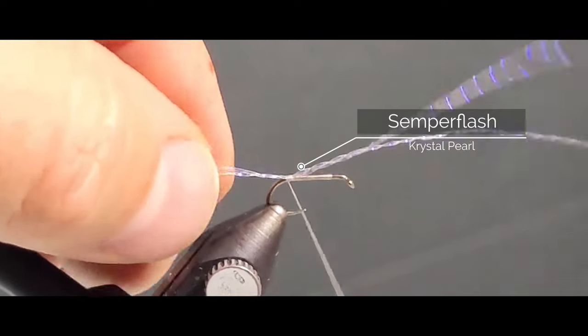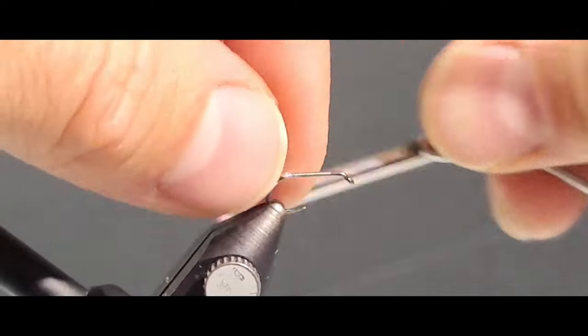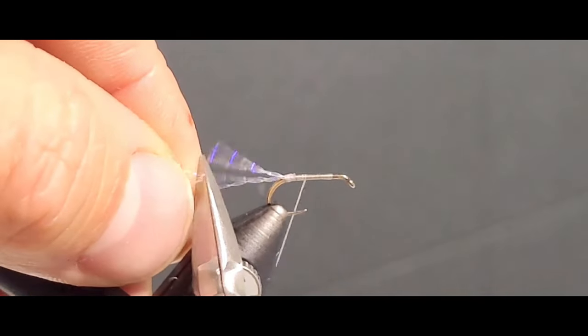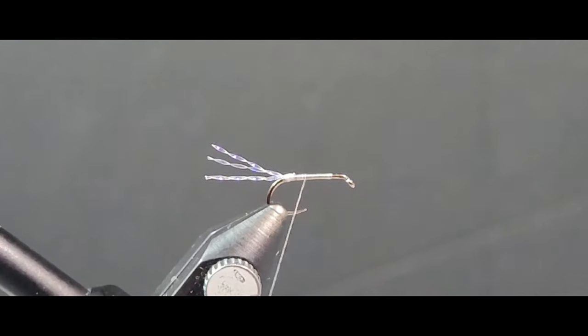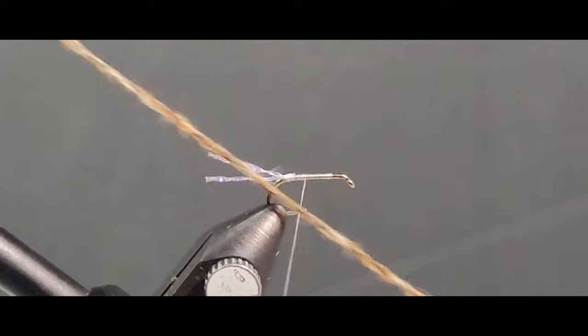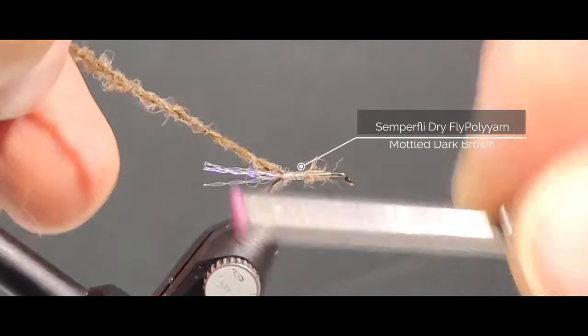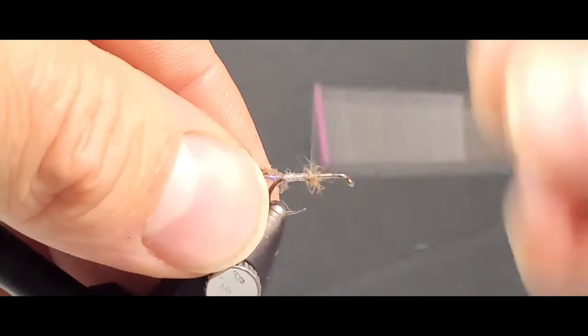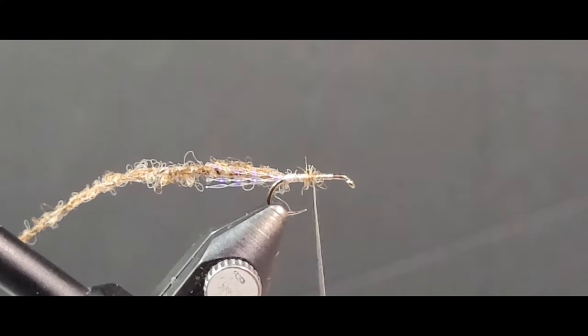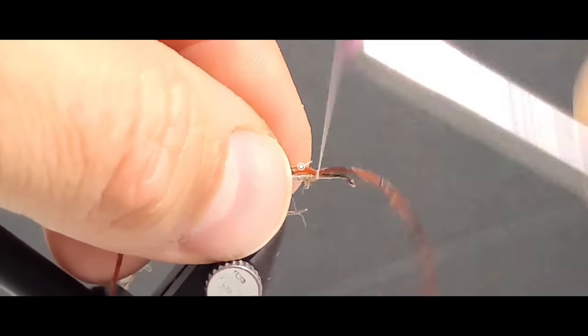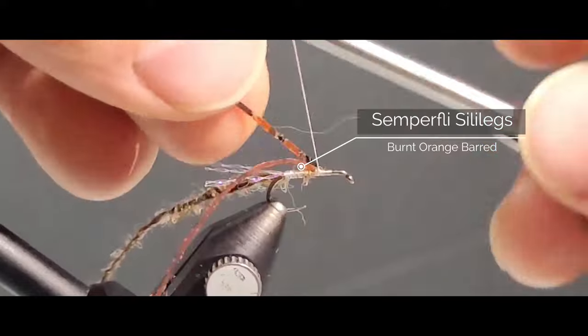These are a neutral buoyancy fly so you can really have fun with this, imitating the natural back swimmers. They'll dive down a little bit, they'll float up, they'll be in and around the vegetation. I've had great success stripping these in about one foot to three feet of water tucked right into the shallows there. The fish will take them very aggressively so make sure you have some strong tippet.